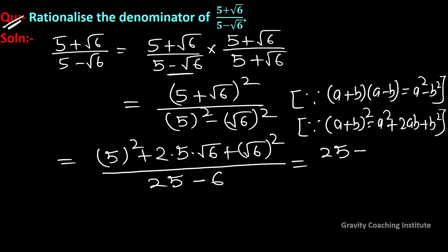This equals (25 + 10√6 + 6)/(25 - 6) which simplifies to (31 + 10√6)/19. The final answer is (31 + 10√6)/19.